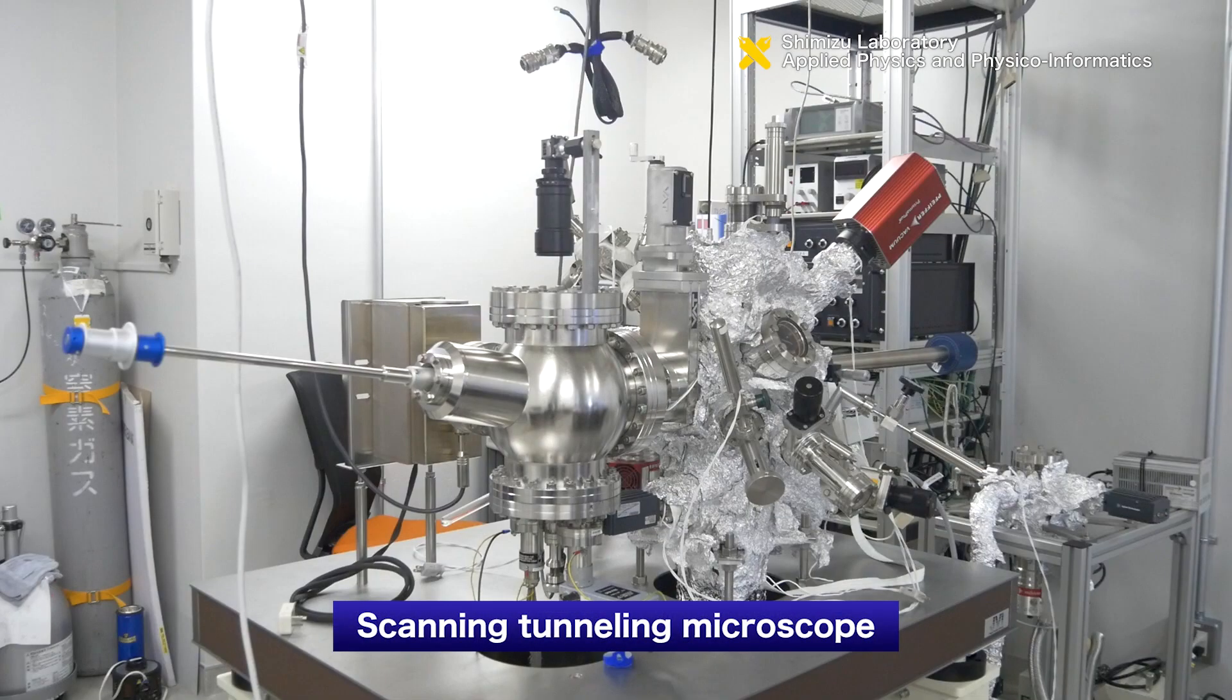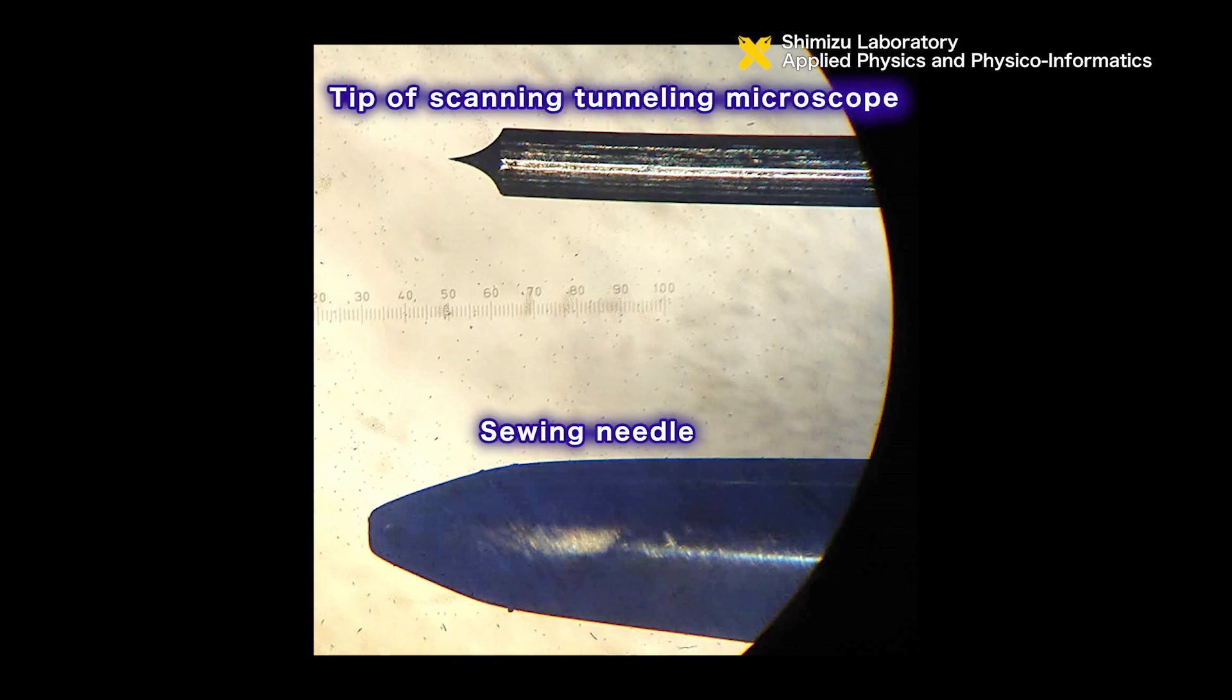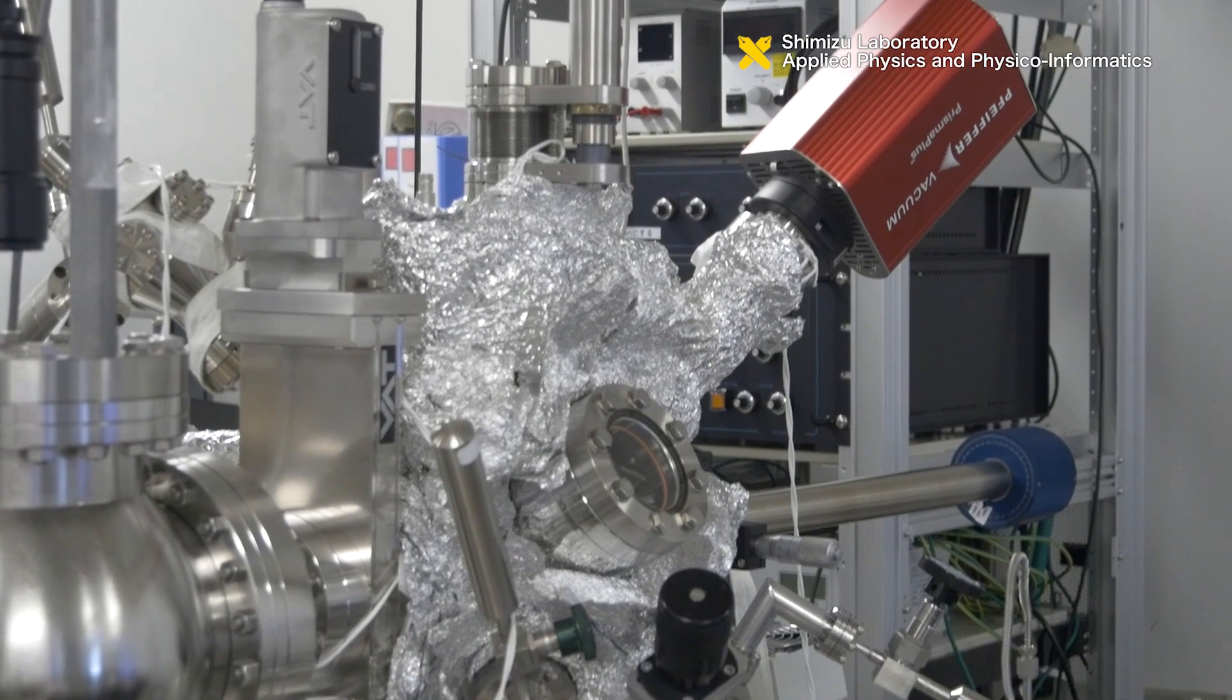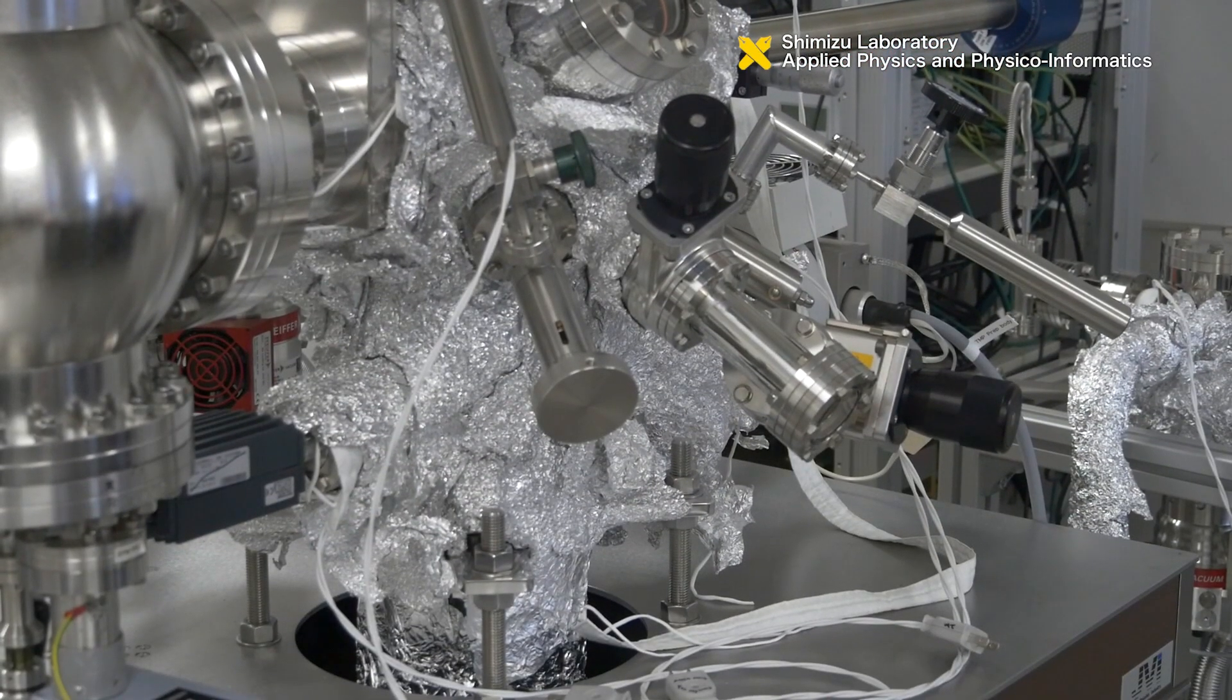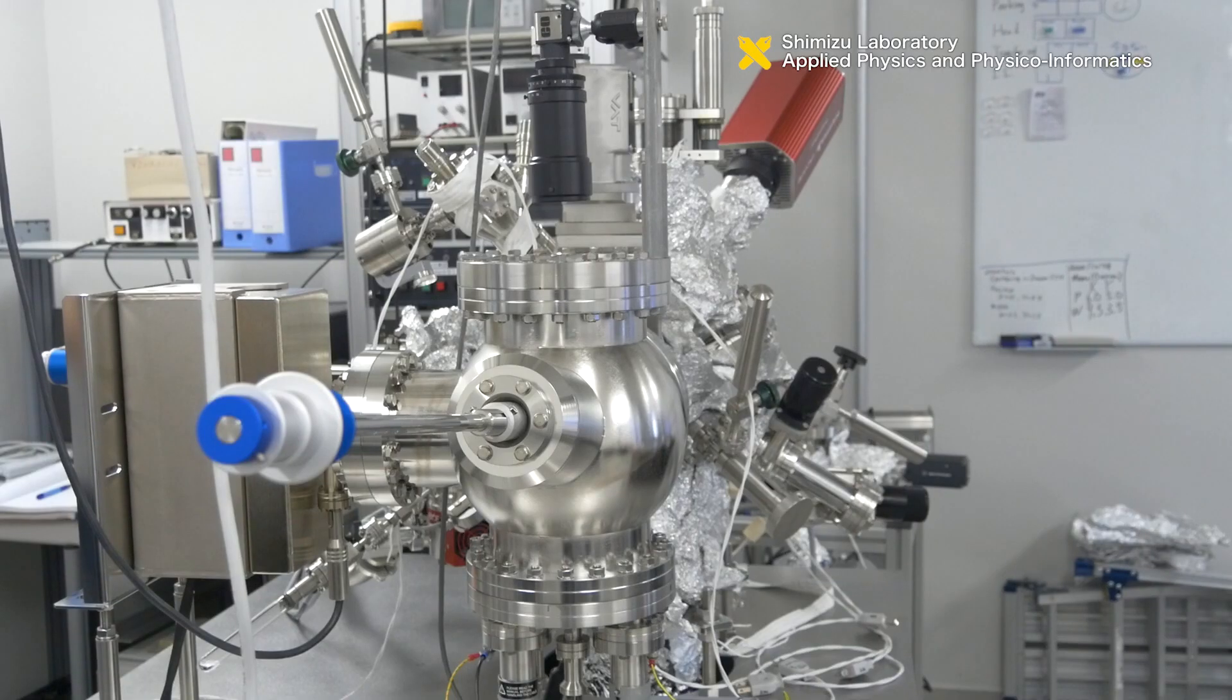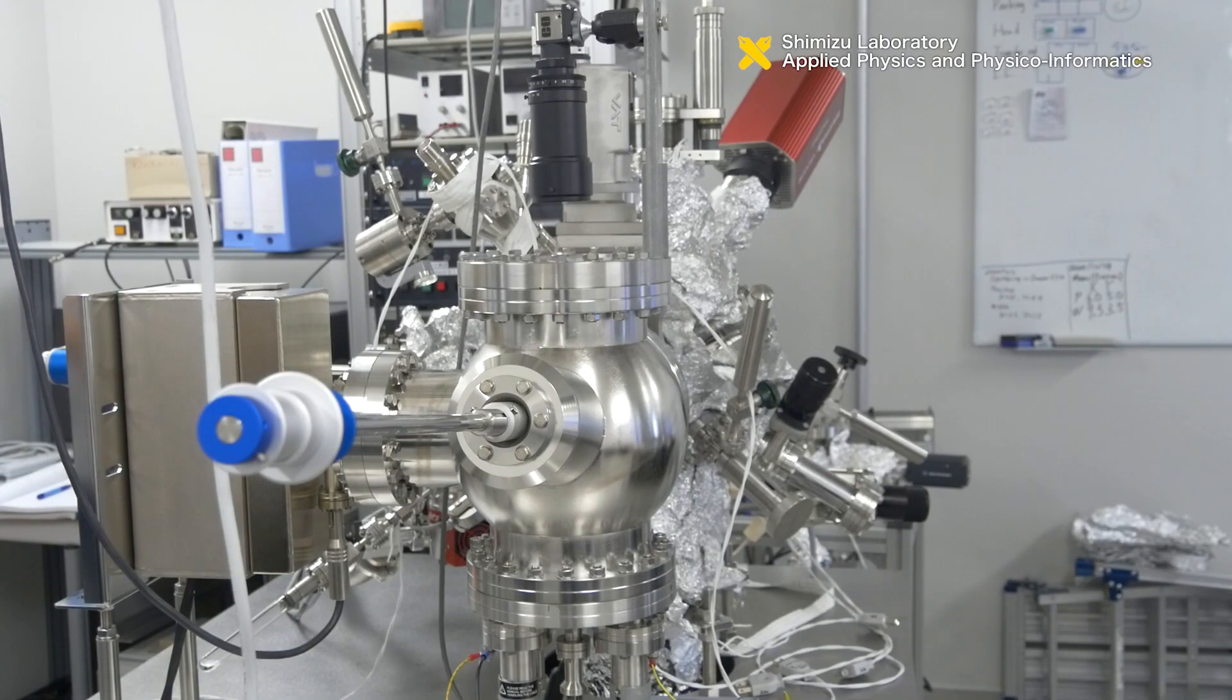With this scanning tunneling microscope, a very thin and sharp metallic tip is installed in the microscope, and bring it to the material surface that you want to investigate until the distance becomes as close as one nanometer or less. Then the current flows due to the quantum tunneling effect. By measuring this current, you'll get information on the material surface.